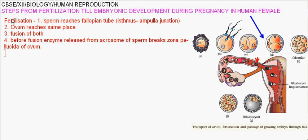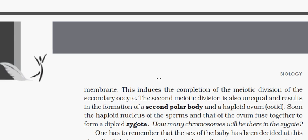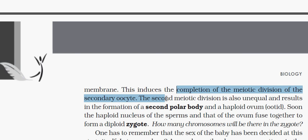This also requires completion of the meiotic division of the secondary oocyte, which leads to unequal division and formation of a second polar body and a haploid ovum called the ootid.